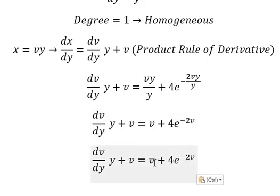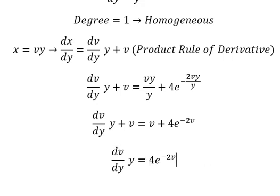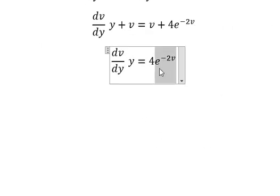V minus v, they will cancel. And now I will put this one go to the left, dy and y will go to the right.